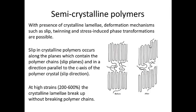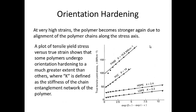At very high strains, the crystalline lamellae will break up without breaking the polymer chains. This allows the polymers to be stretched even further and is the reason why polymers are able to exhibit strains of greater than 200% elongation. One phenomenon that occurs when polymers are pulled to very high strains is that they become stronger due to the alignment of the polymer chains along the stress axis, or the c-axis of the unit cell.